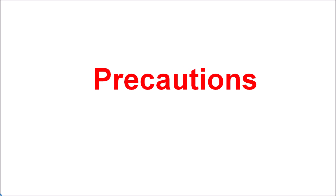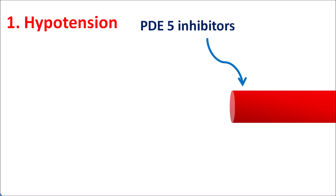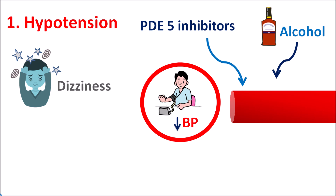Now let us see the precautions of PDE5 inhibitors. The first precaution is hypotension. PDE5 inhibitors act on blood vessels and produce vasodilatation. Along with relaxation of corpus cavernosum, they also produce systemic vasodilatation resulting in decreased blood pressure. This is more important when these drugs are combined with alcohol, since alcohol can also produce vasodilatation, so PDE5 inhibitors should be carefully used with alcohol to avoid significant hypotension.